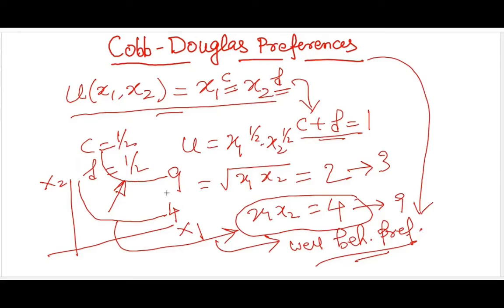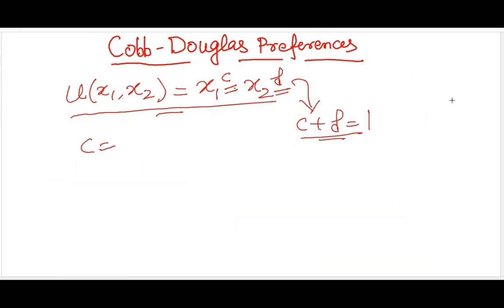So what if I choose c is equal to 2 and d is equal to 1? In that case also, I can convert it to this form. How? So if this is the situation, my utility will look like x1 to the power 2 and x2 to the power 1. If you remember that under monotonic transformations, my utility value changes but the underlying preferences remain the same. So I can represent the preference with a modified utility function, right?